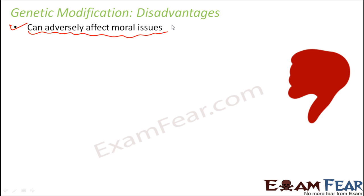Those who are developed countries sometimes try to take advantage of the traditional knowledge of developing countries. They use technology to come up with better products, but they are actually stealing ideas from developing countries. These kinds of issues affect the ethical standing of several sections of people. That is why in every country there are certain laws which restrict or give limitations to genetic modification.